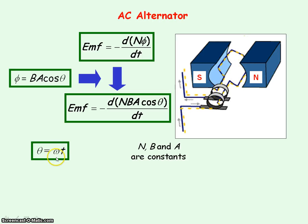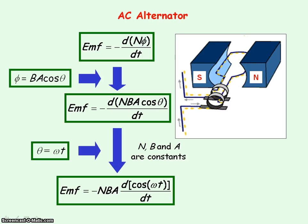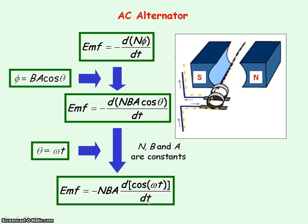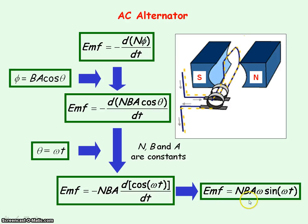We can remove N, B, and A from the differentiation and bring them to the front. Also, theta is equal to omega t, where omega is the angular frequency — that is 2 pi f, or 2 pi divided by the time period — and t is time. If we substitute theta into this equation, we get this. To get the induced EMF, we differentiate cos(omega t) with respect to time. Differentiating cos gives a minus sign, and combined with the existing minus sign, this gives a positive sign. We also differentiate omega t with respect to time, so omega comes out. Our induced EMF will therefore follow a sine shape with respect to time.